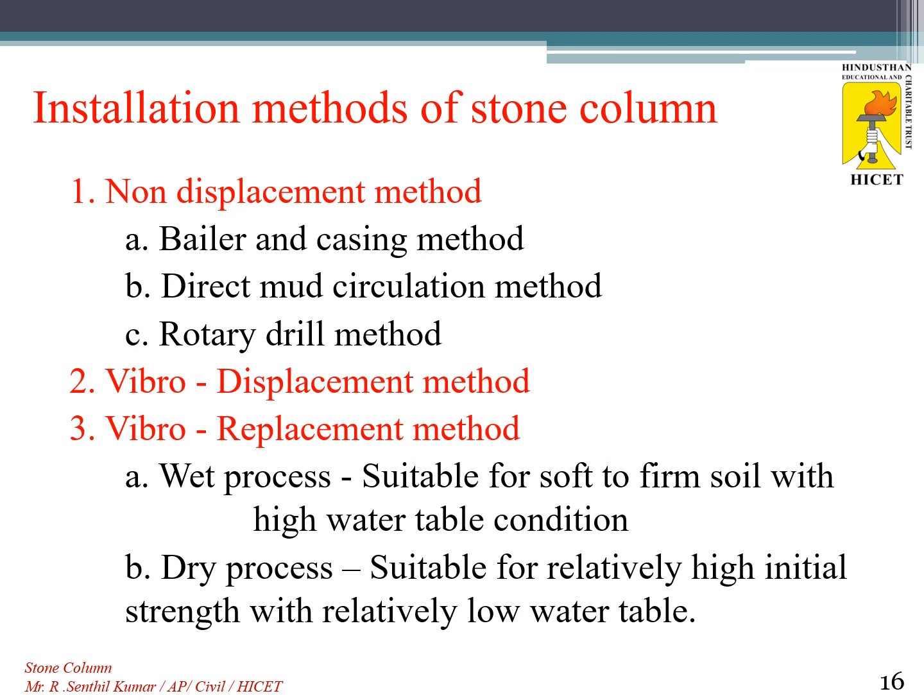Several installation methods of stone columns are used. The first is the non-displacement method, which includes the bailing and jetting method, direct mud circulation method, and rotary drill method. The second is the vibro-displacement method, and the third is the vibro-replacement method, which has two processes: wet process and dry process. The wet process is suitable for soft to firm soil with a high water table, while the dry process is suitable for relatively high initial strength soil with a relatively low water table.